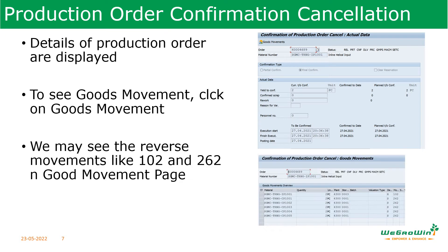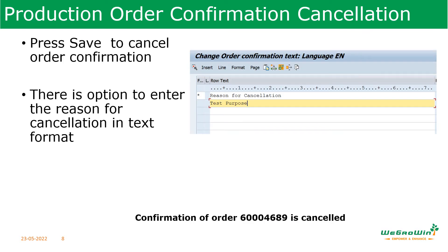In the goods movement, we can see the goods movement reversals. For example, goods issue movement type 101 becomes 102, and goods issue 261 becomes 262. We can save the confirmation cancellation with the Save button. There is also an option to enter the reason for the cancellation, so that in future we can track why the order confirmation was cancelled. Once we save, the confirmation order will be cancelled.